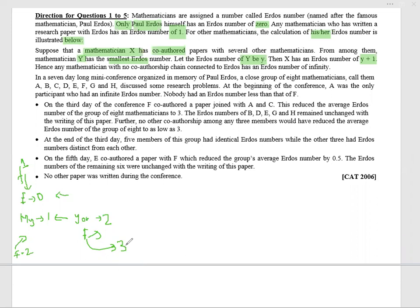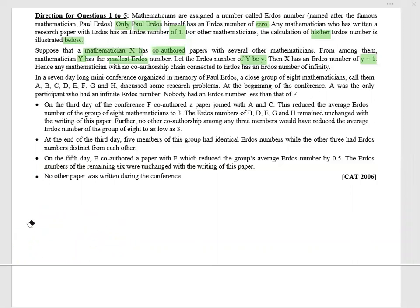That is the logic for how a new mathematician gets an Erdős number. Any mathematician with no co-authorship chain connected with Erdős gets an Erdős number of infinity.